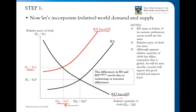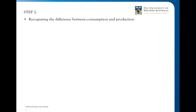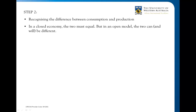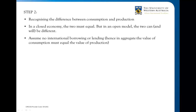All we're doing here is giving an explanation for the change in that relative price. Now we want to turn to the important issue of separating — to some extent — the difference between consumption and production. In a closed economy the two must be equal: whatever you produce must be consumed and you can't consume more than you produce by definition. But in an open economy the two can and will be different.